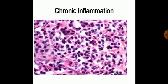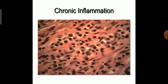This is the morphological, microscopic picture of chronic inflammation. There is mainly mononuclear cell infiltration — no neutrophils. There can be plasma cells. This is again a picture showing abundant plasma cells in chronic inflammation.